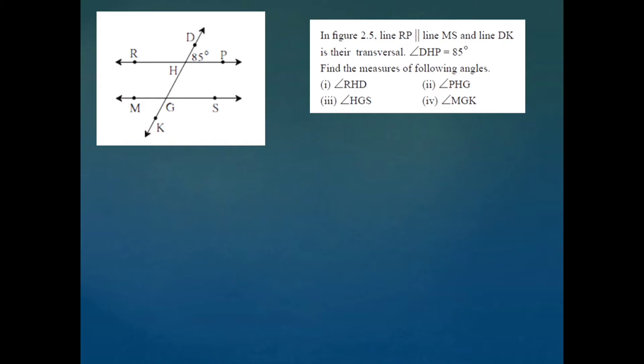The first question is: given in the figure, line RP is parallel to line MS and line DK is their transversal. Measure of angle DHP is equal to 85 degrees, and from that we have to find the measures of angle RHD, angle PHG, angle HGS, and angle MGK.